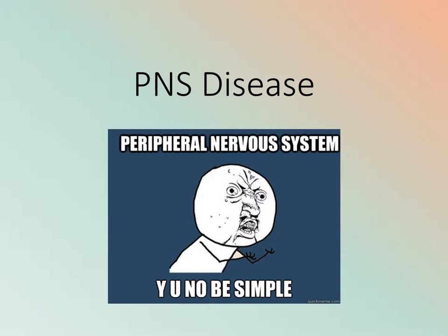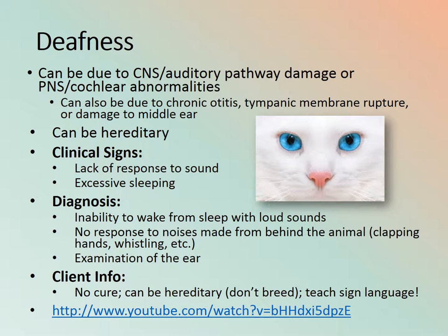Moving on to the peripheral nervous system — deafness. It can be due to central nervous system auditory pathway damage, peripheral nervous system or ear cochlear damage or abnormalities, chronic otitis, tympanic membrane rupture, or damage to the middle ear. It can be hereditary, so these animals probably shouldn't be used for breeding.